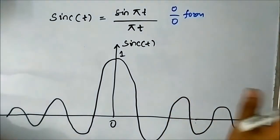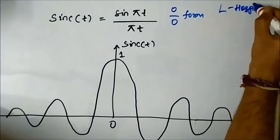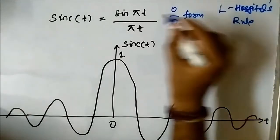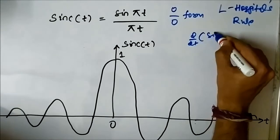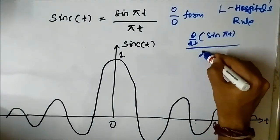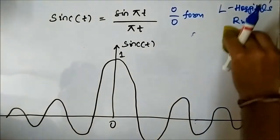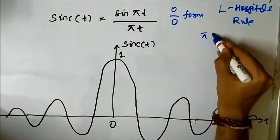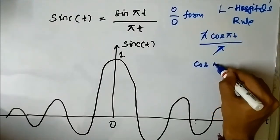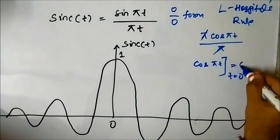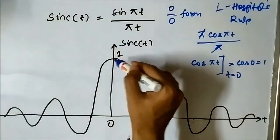From basic high school mathematics, when the 0/0 form comes, we use L'Hôpital's rule. We differentiate both the numerator and the denominator: d/dt of sin(πt) divided by d/dt of πt. We get π·cos(πt) / π. The π's cancel, giving us cos(πt). At t equals 0, cos(0) equals 1. So at t equals 0, the amplitude of this function is equal to 1.